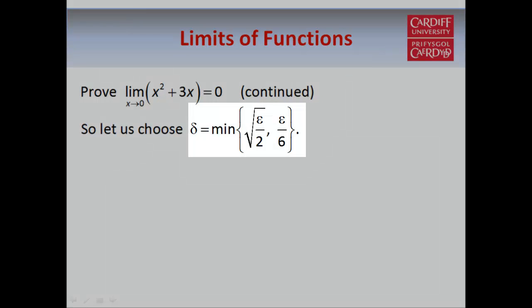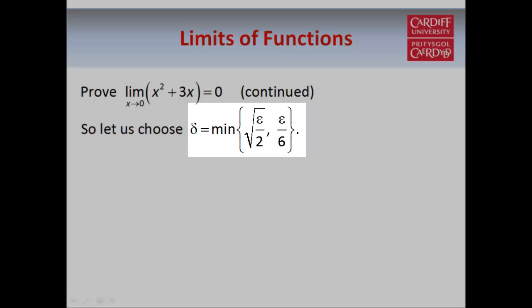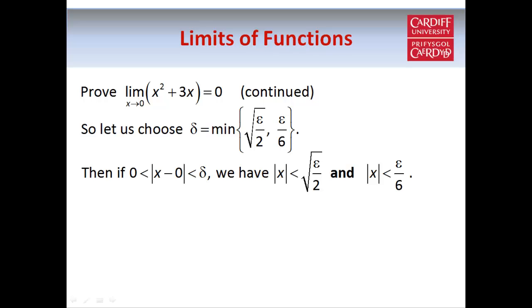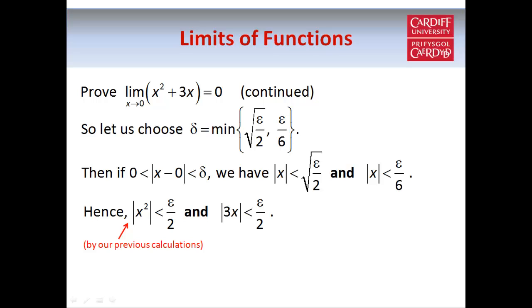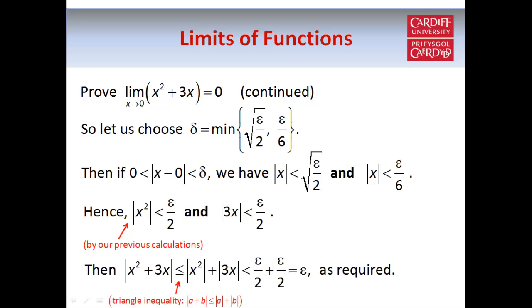So if we define delta to be the minimum of √(ε/2) and ε/6, whichever one is smaller, then we know that if |x - 0| < δ, then it has to be smaller than both √(ε/2) and ε/6. Based on our calculations, both inequalities will be satisfied, and that means using the triangle inequality, |x² + 3x| ends up being smaller than ε/2 + ε/2 = ε. So that completes the proof.